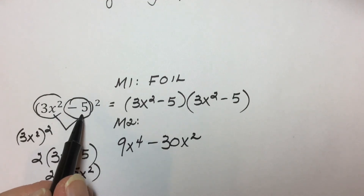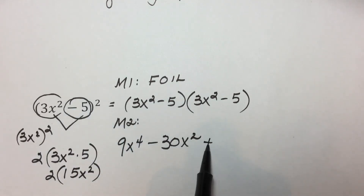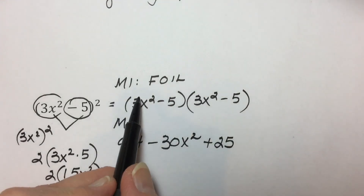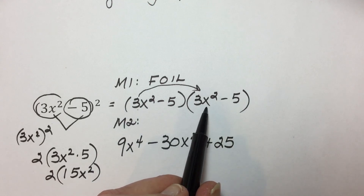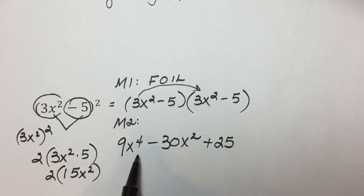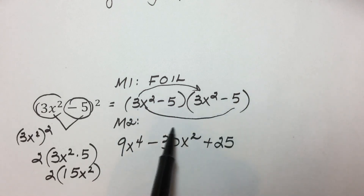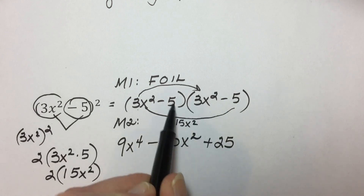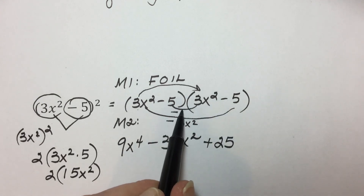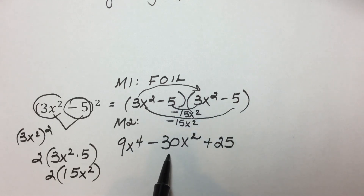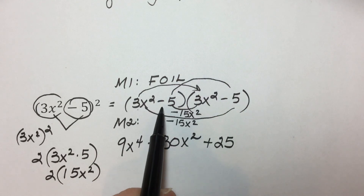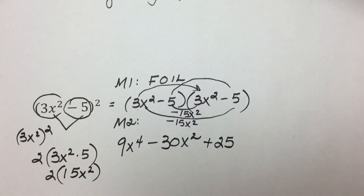Our last term is the square of the second term: negative 5 times negative 5 is positive 25. We would see the same result using FOIL: first terms, 3x squared times 3x squared is 9x to the 4th. Outside terms: 3x squared times negative 5 is negative 15x squared. Inner terms: negative 5 times 3x squared is another negative 15x squared — there's the negative 30x squared. Last terms: negative 5 times negative 5 is positive 25. You make the decision — FOIL it, or use the shortcut for a perfect square trinomial.